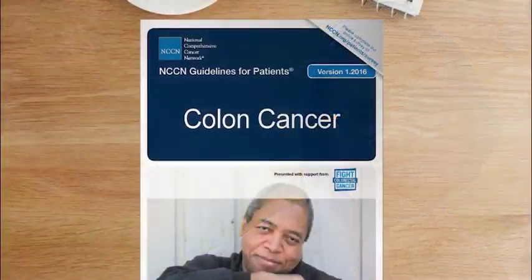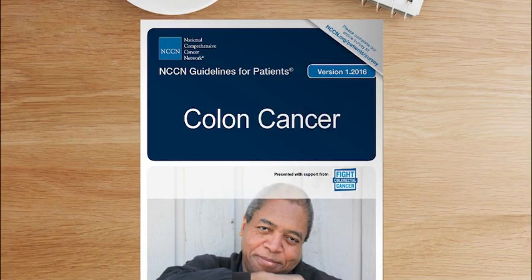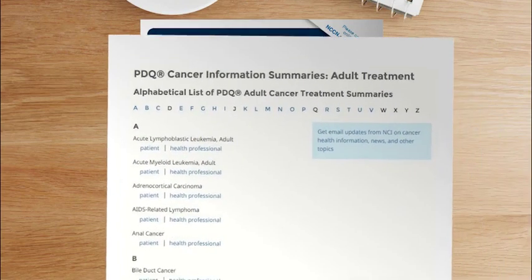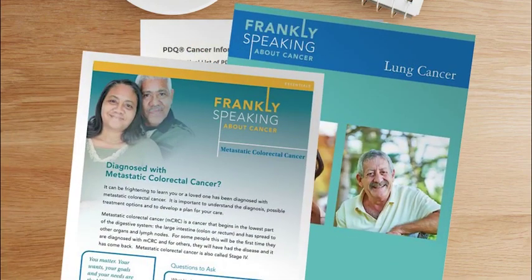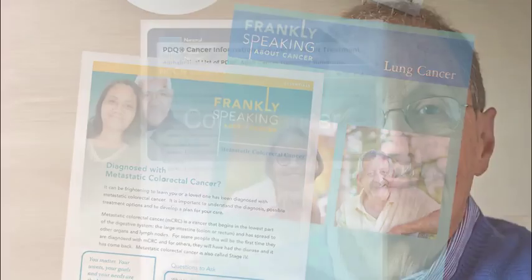Many patients find cancer treatment guidelines confusing. Organizations that develop guidelines often publish materials for patients that include the same information but are easier to understand. The National Cancer Institute provides helpful treatment information summaries. Their materials for patients are easier to understand than the ones written for healthcare professionals. Many cancer support organizations also have materials that help patients understand treatment guidelines. Links to all of the materials and organizations you've learned about are available at the end of the course.